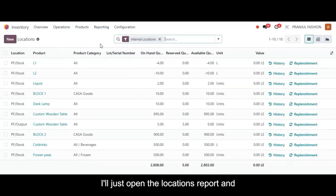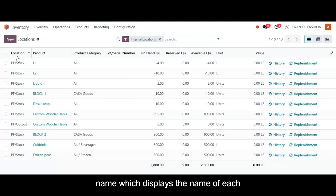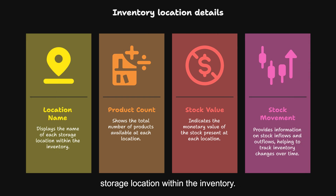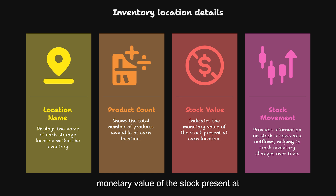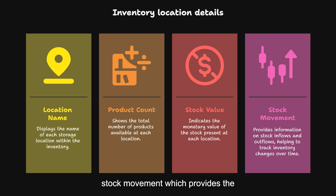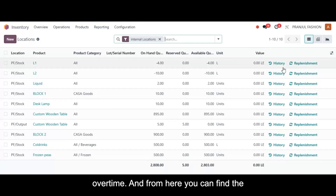Next we have the locations report. Here you can find the key components of the report, which include the location name — displaying the name of each storage location within the inventory — the product count showing the total number of products available at each location, the stock values indicating the monetary value of stock at each location, and the stock movement providing information on stock inflows and outflows to track inventory changes over time.